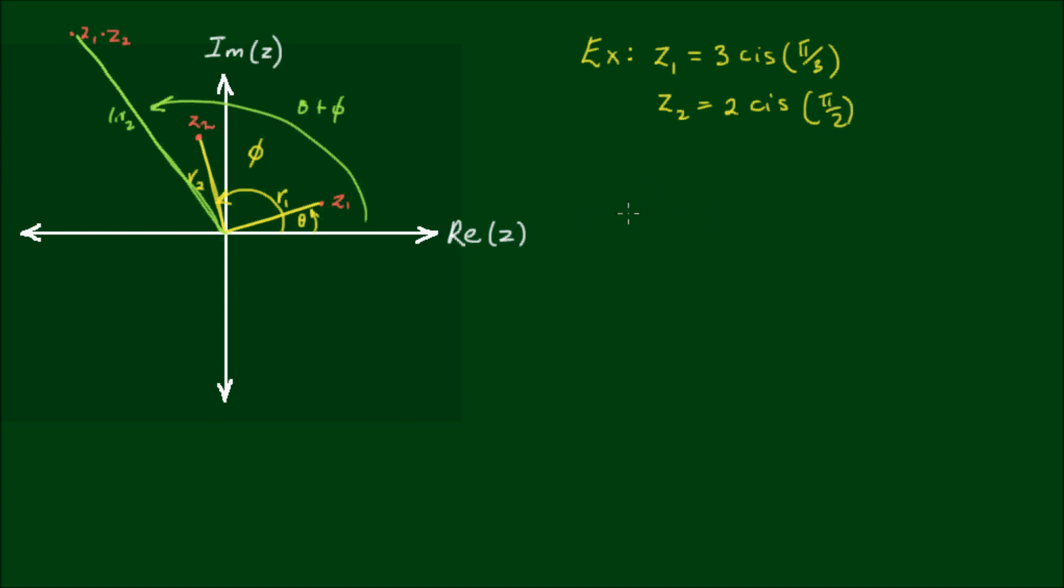Then the product of z1 and z2 is simply the product of the two magnitudes, so in this case 3 by 2 is equal to 6, and then cis, and then the addition of the two angles. π on 3 plus π on 2 is equal to 5π on 6.